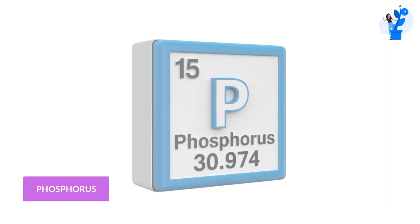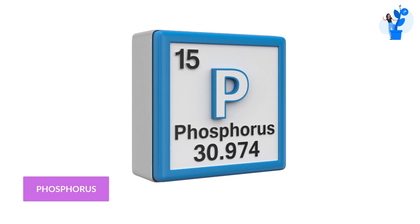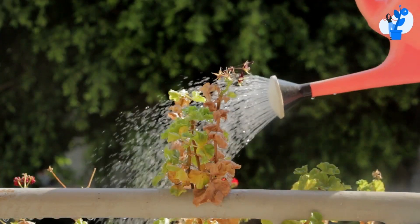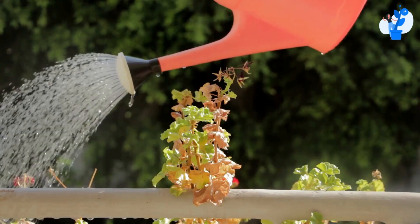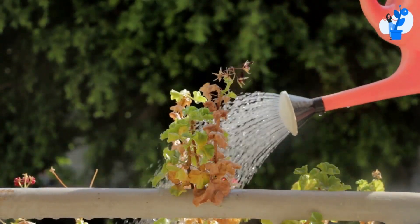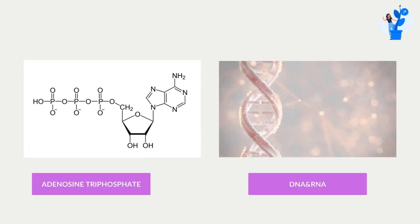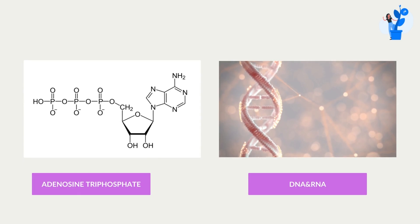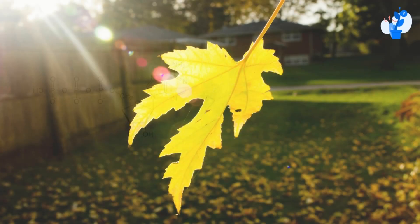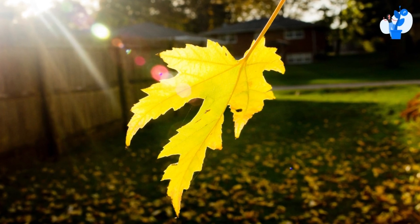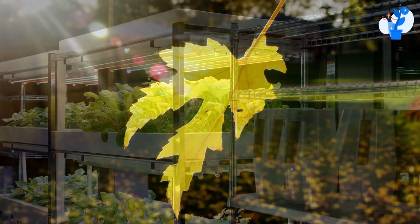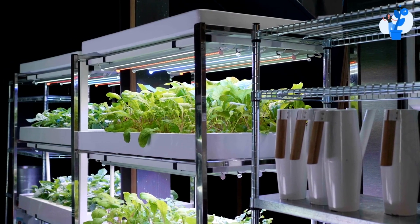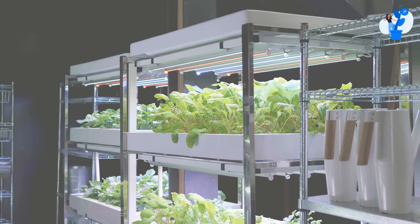Phosphorus is the essential element that plays a key role in plant growth — phosphorus is something plants can't live without. It is a key component of several important plant components including ATP, also known as adenosine triphosphate, DNA, and RNA. Phosphorus is also necessary for the synthesis of certain enzymes and hormones, and it plays a key role in the transfer of energy within the plant.